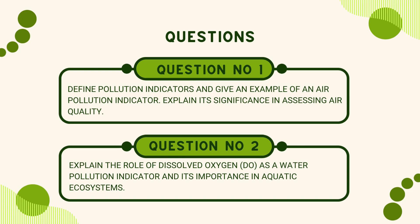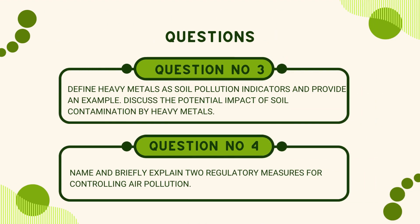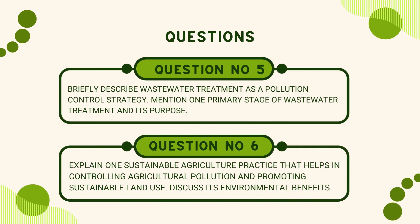Here are some questions related to the topic. Number 1: Define pollution indicators and give an example of an air pollution indicator. Explain its significance in assessing air quality. Number 2: Explain the role of dissolved oxygen (DO) as a water pollution indicator and its importance in aquatic ecosystems. Number 3: Define heavy metals as soil pollution indicators and provide an example. Discuss the potential impact of soil contamination by heavy metals. Number 4: Name and briefly explain two regulatory measures for controlling air pollution. Number 5: Briefly describe wastewater treatment as a pollution control strategy. Mention one primary stage of wastewater treatment and its purpose.